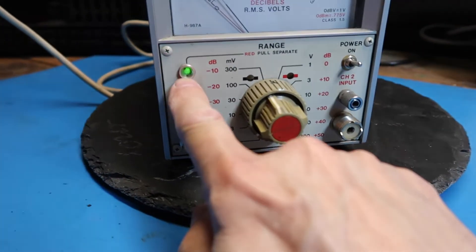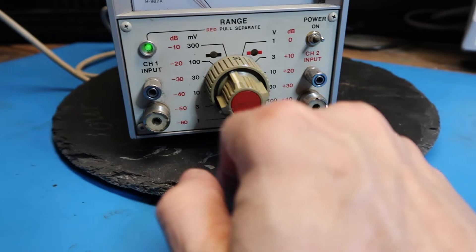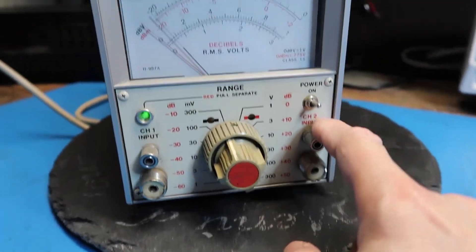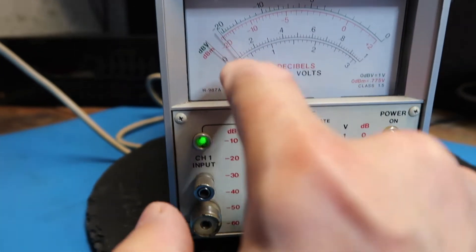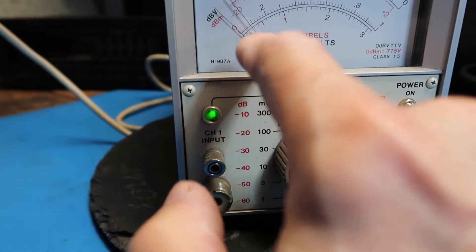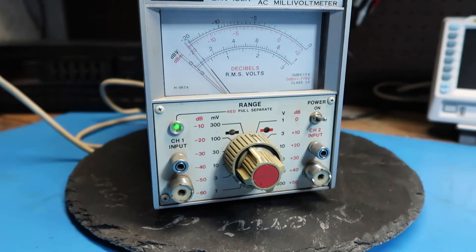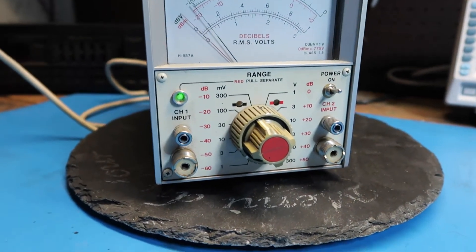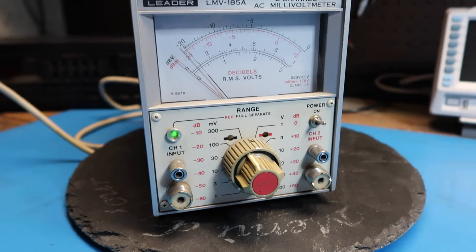We've got our channel 1 input light on here. I guess there isn't a light for channel 2. Meter is pretty stable. Bouncing around just a little bit. I don't have anything on here yet. And we'll try that next.